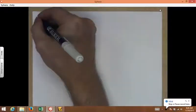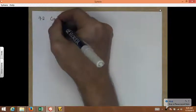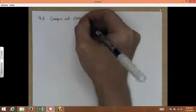Alright, so it's chapter 4, section 2. The name of this is Compare and Order Rational Numbers.